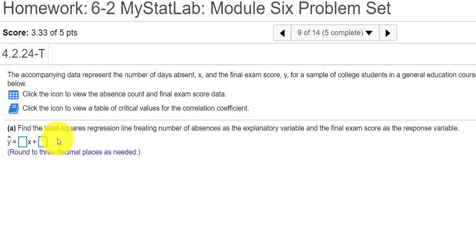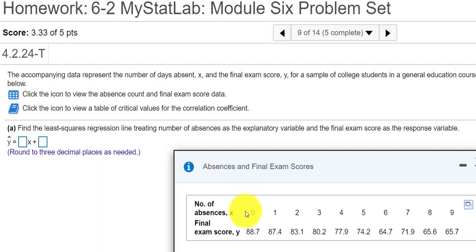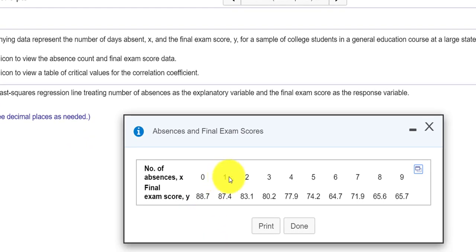So the first thing we need to do is come up with a regression equation. So let's look at our data. Here's our data. So it looks like a student with zero absences has an exam score of 88.7. One absence would be 87.4 and so on. So it looks like the more absences, the lower the score. That kind of makes sense.